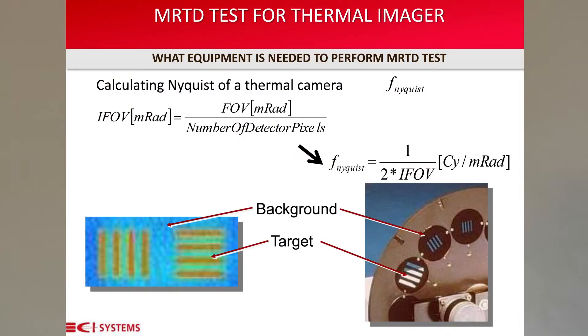The Nyquist limit of the camera is often received from the optical designer or camera manufacturer, but it can also be estimated by the following equation. Remember that the actual performance of a camera or system is based on many variables, from the window protecting the camera, lens, detector, through the image optimization algorithm, and the size and quality of the viewing monitor used by the operator.